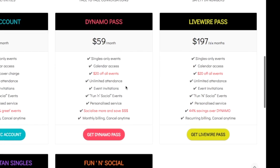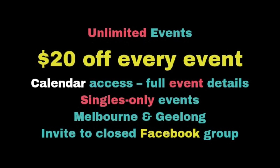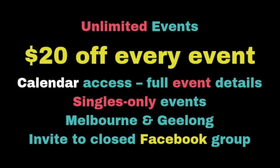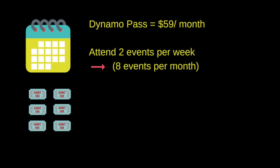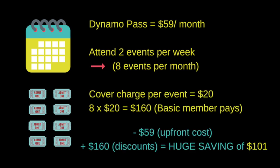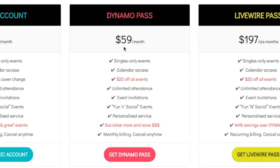For singles who have the time and are ready to come out and be more social, I would recommend registering for the Dynamo Pass or the Livewire Pass. With the Dynamo Pass it's $59 up front for the month, which gives you calendar access so you can see full event details, plus you get $20 off every event you attend during that month. If you were planning to attend eight events during that month — say two events per week — as a basic member you'd be paying a $20 cover charge for each. Because you get a $20 discount off every ticket while your Dynamo Pass is active, this would end up being a saving of $100, allowing you to be more social and meet more people without breaking the bank.